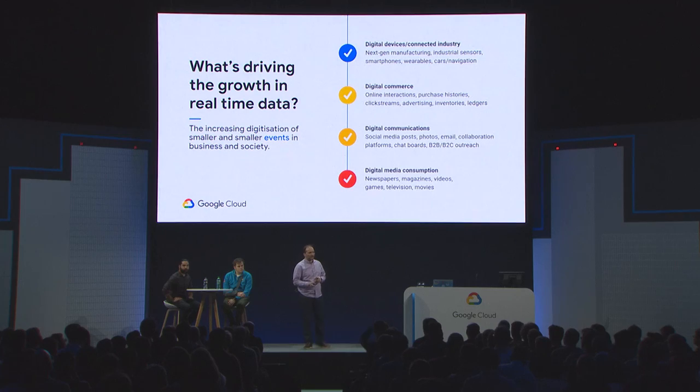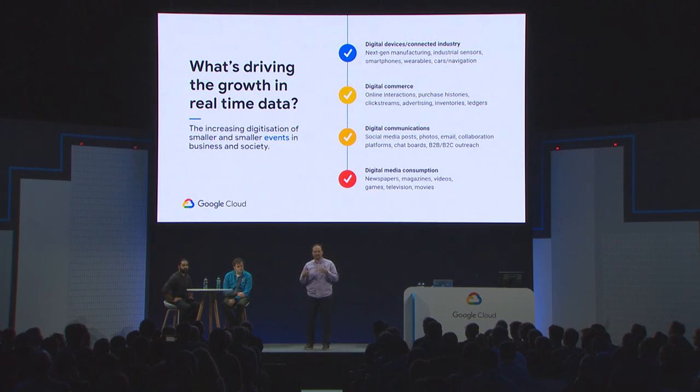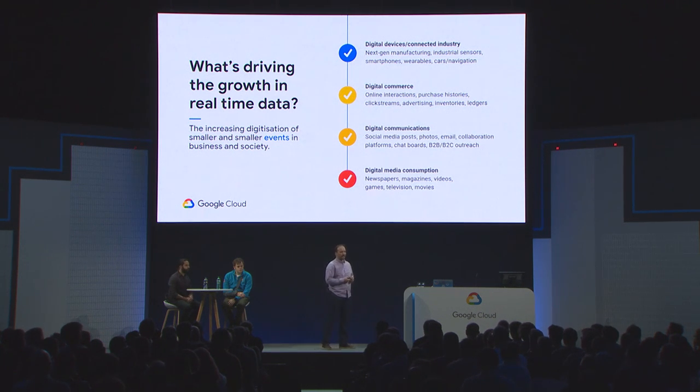What is driving the growth of real-time data? It's growing much faster than other types of data. I'll highlight four important sources: the explosion of user actions such as clicks, interactions in games, social media, photos, and emails; machine and device data produced on IoT devices, laptops, PCs, and mobile phones; changes in databases, which are also quite valuable; and the emergence of AI and machine learning and its need for real-time data.